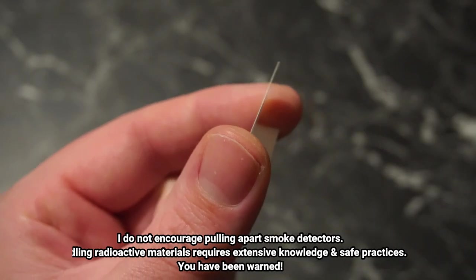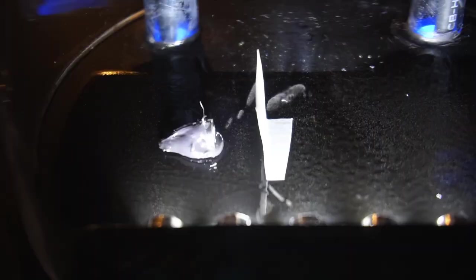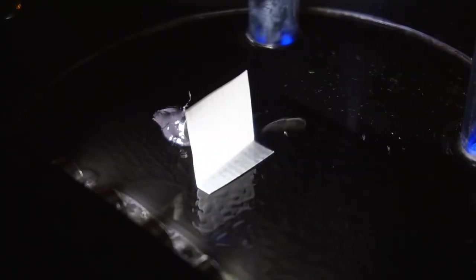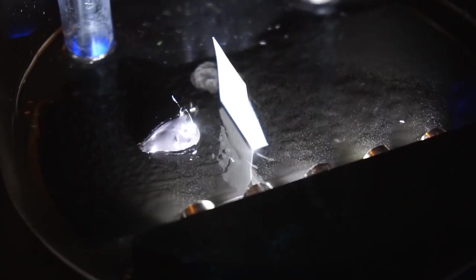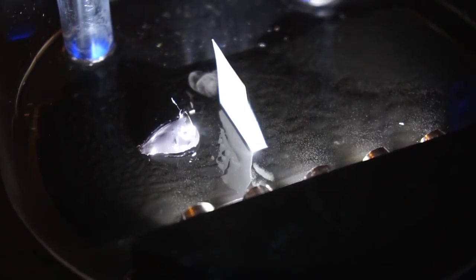I'll place this piece of paper inside the chamber. You'll notice even a humble piece of paper stops alpha rays. Alpha rays are very weak, the dead skin layer on your body is enough to stop them so they pose little risk to us unless you ingest or inhale alpha emitting particles.